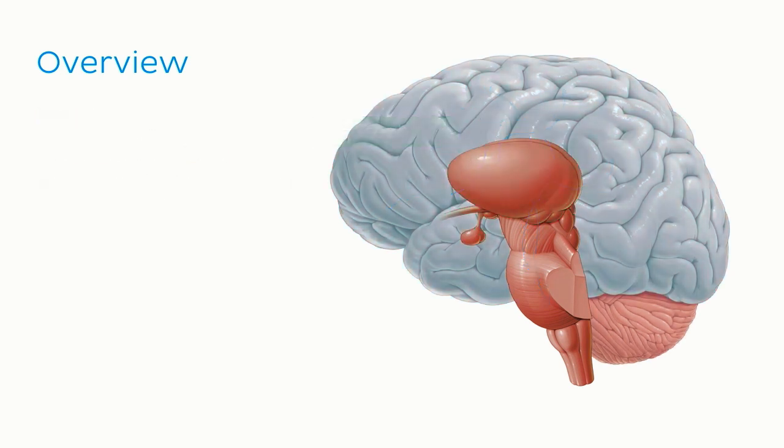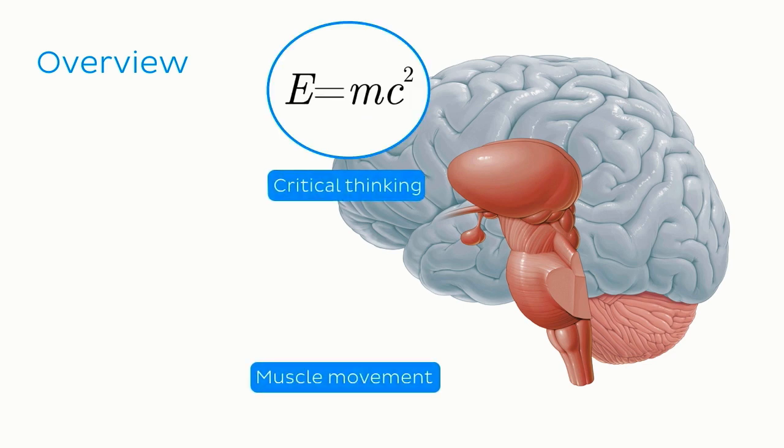Finally, we'll reach the large convoluted mass that constitutes the cerebrum, or the telencephalon. And as we'll see, this is where the most advanced functions take place, like critical thinking and voluntary muscle movements.